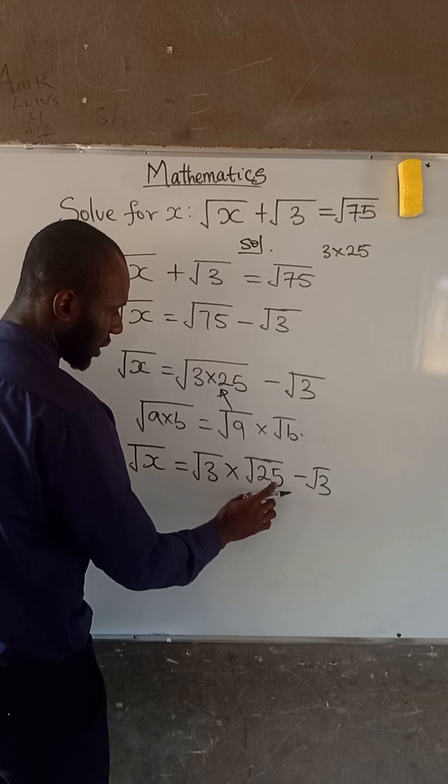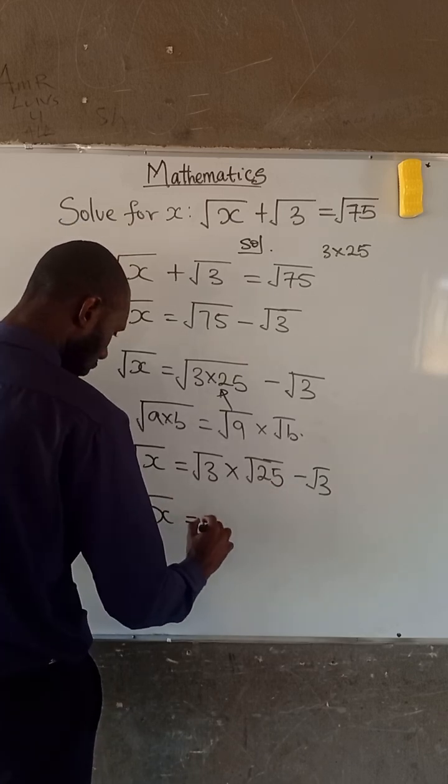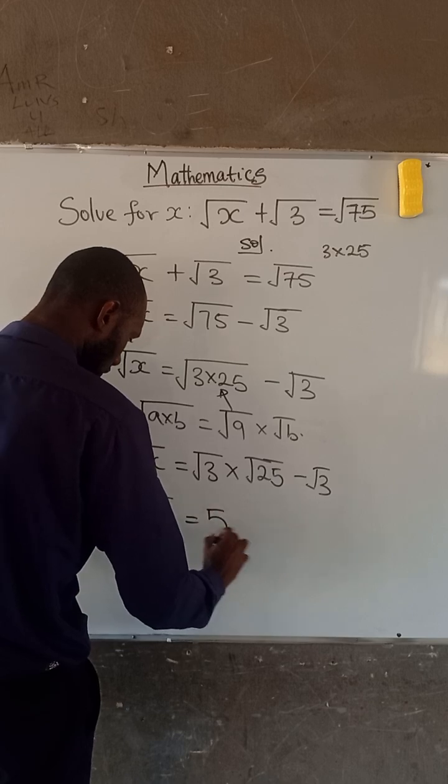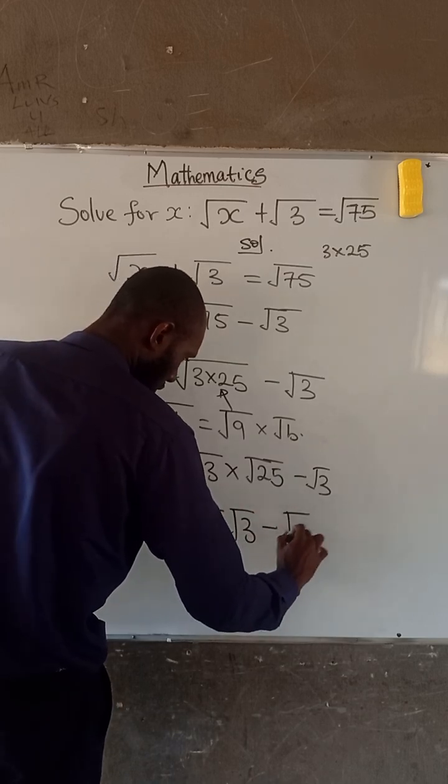Now root 25 is given as 5. This becomes root x equal to 5 root 3 minus root 3.